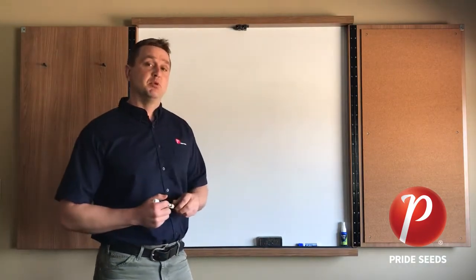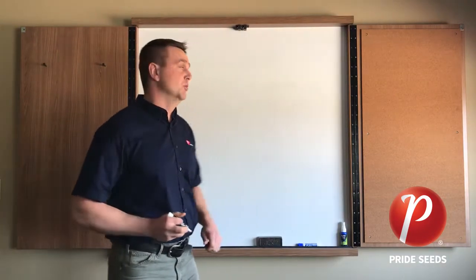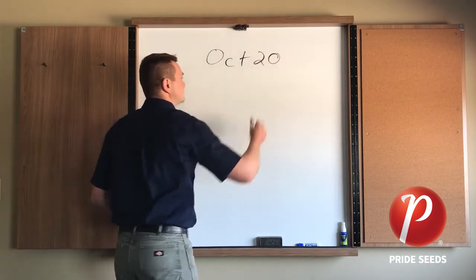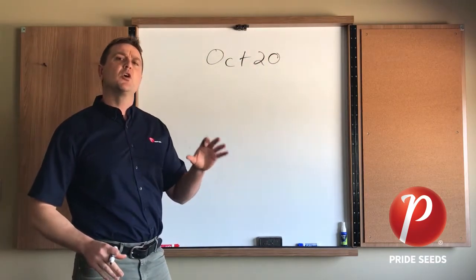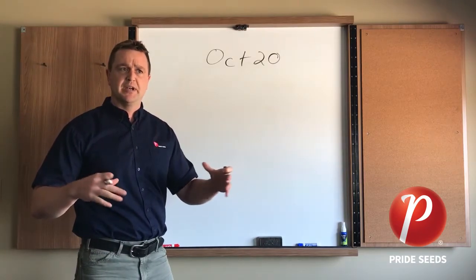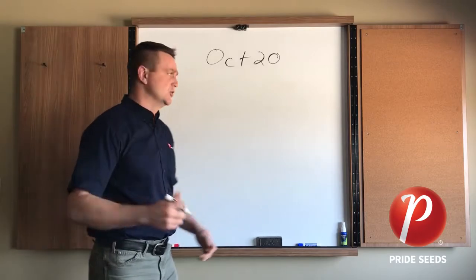So if we were to pretend we had a plot and let's say it was harvested on October 20th. So our plot comes off on the 20th of October and we had one hybrid, we'll call it hybrid A and it's a known corn, it's been around for a while and everyone seems to agree what the maturity is, it's well understood.